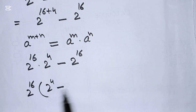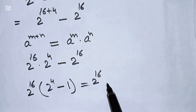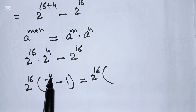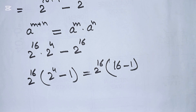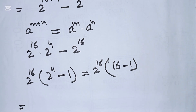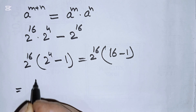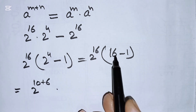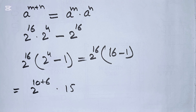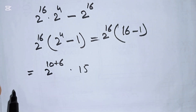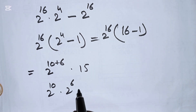We factor out 2^16, giving us 2^16 times (2^4 minus 1). Then 2^4 minus 1 equals 16 minus 1, which is 15. And 16 can be written as 10 plus 6, so we have 2^10 times 2^6 times 15.